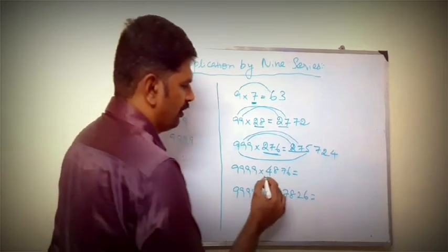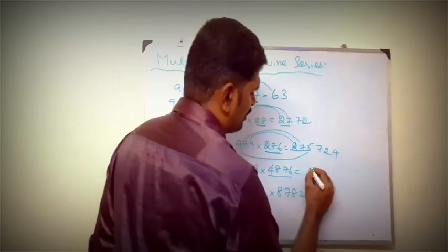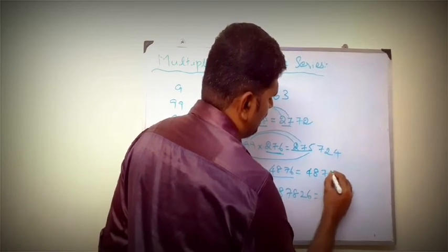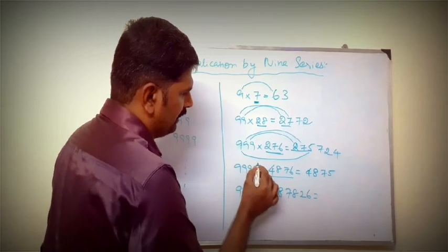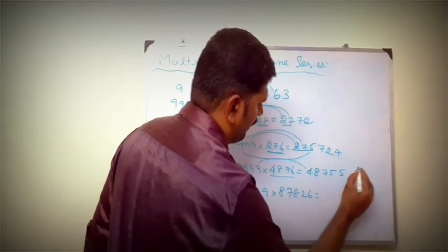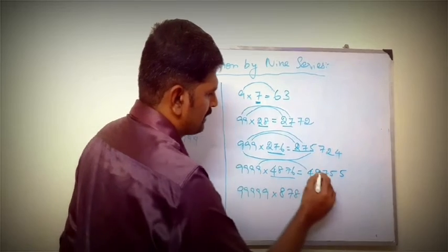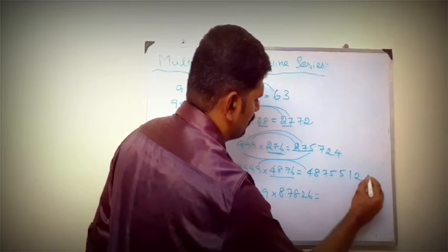4-digit: 4876. 4876, result is 4875. 9 minus 4 is 5, 9 minus 8 is 1, 9 minus 7 is 2, 9 minus 5 is 4.